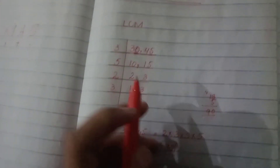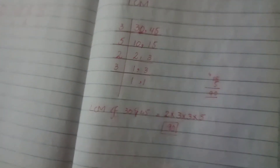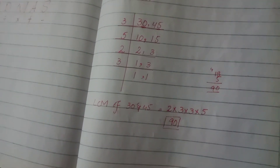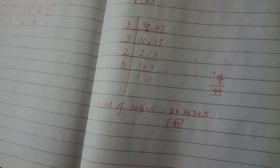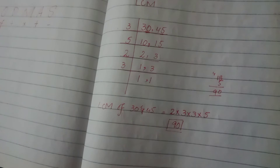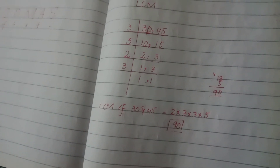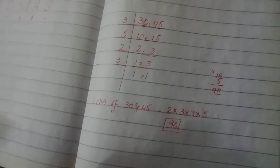LCM of 30 and 45 is 90. Students, hope that you understood it. If you like this video then please share it and subscribe to my channel. Thank you so much.